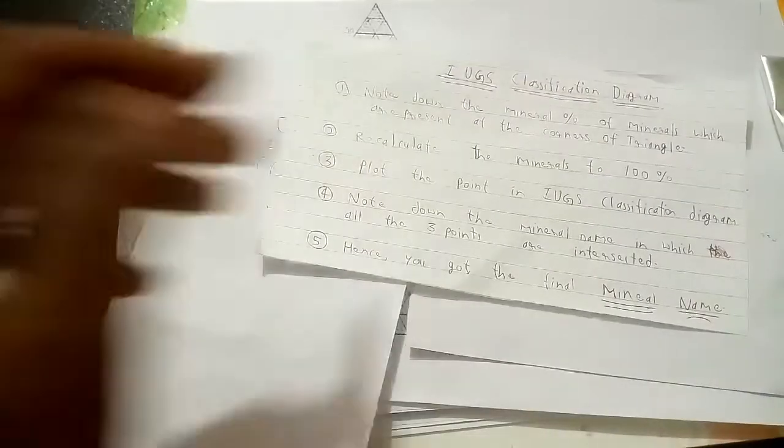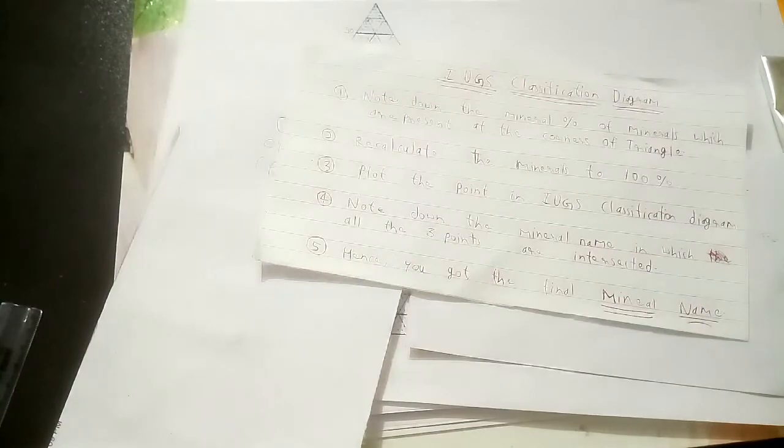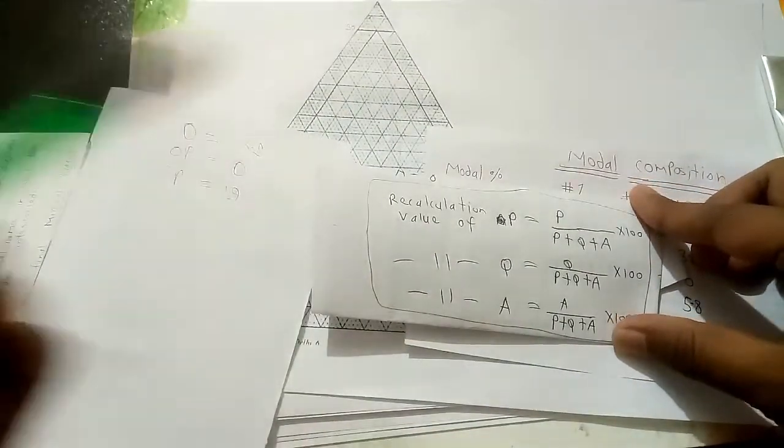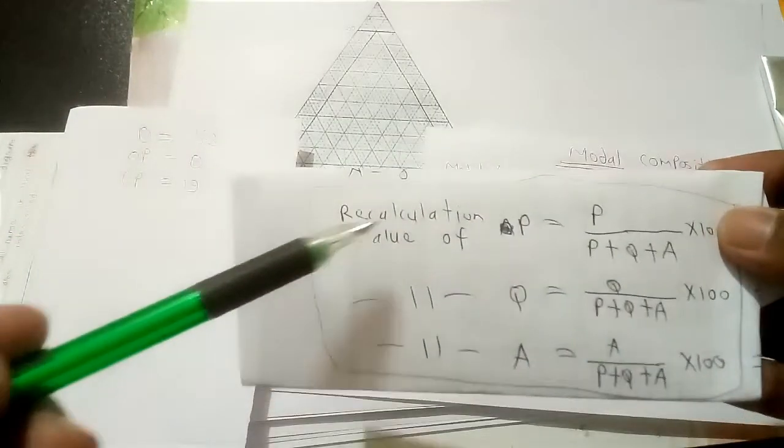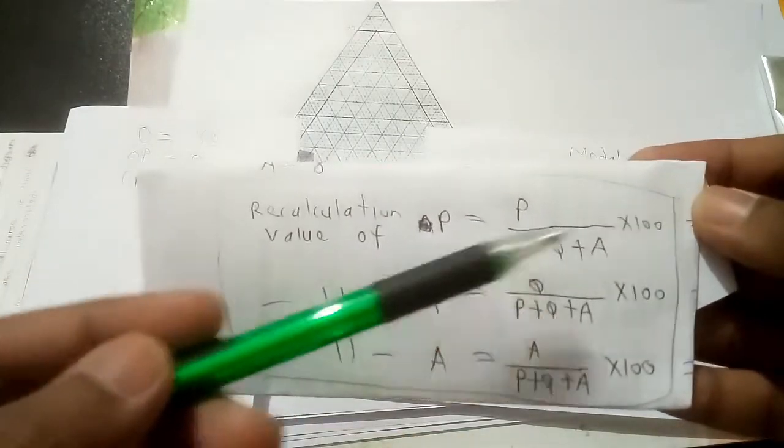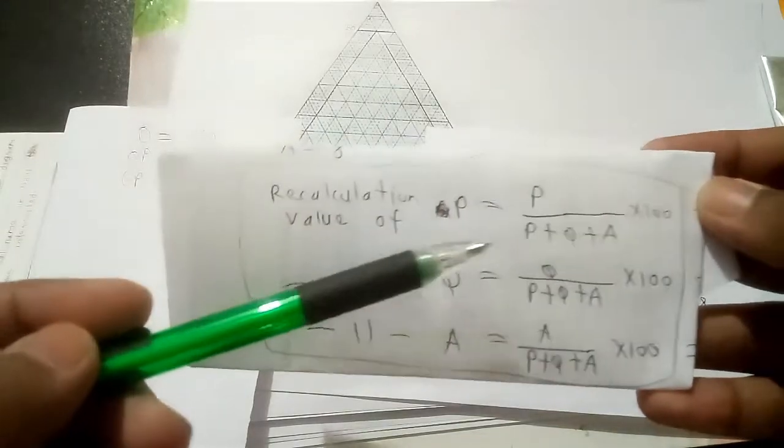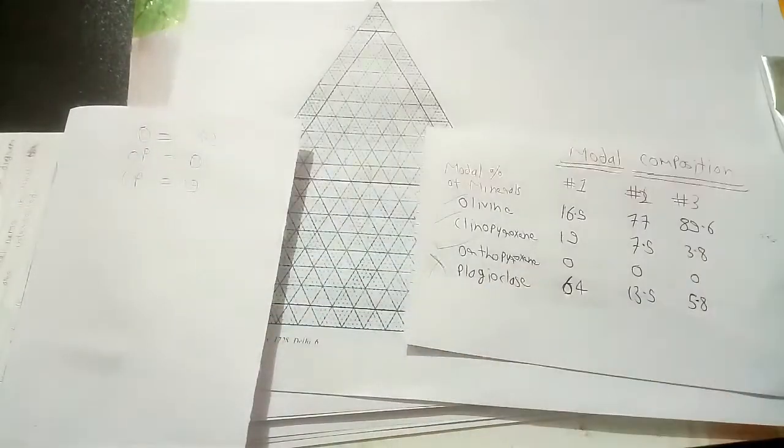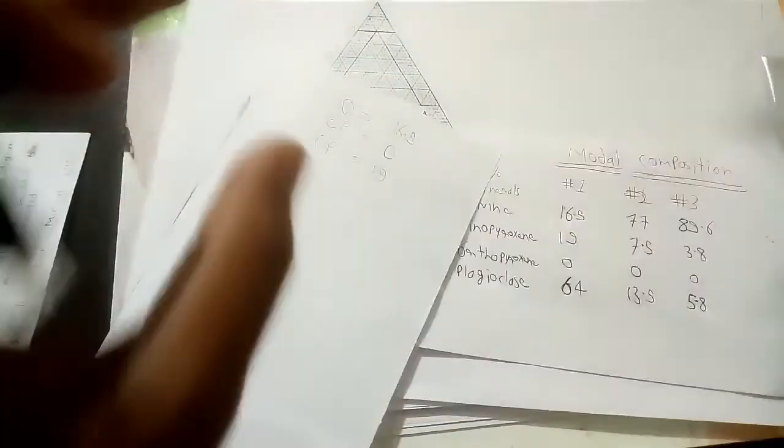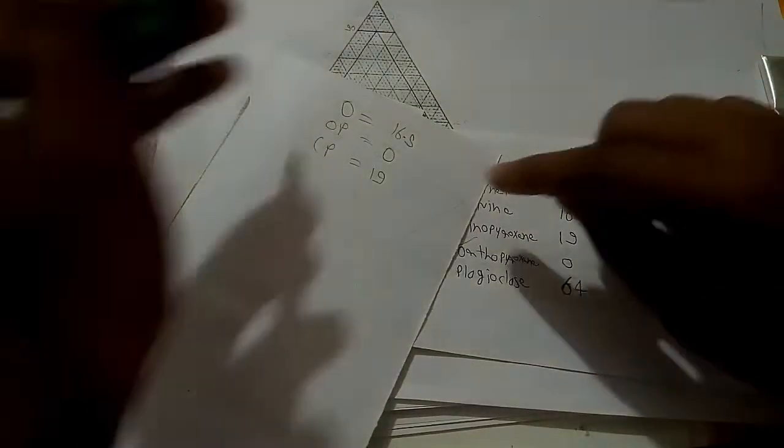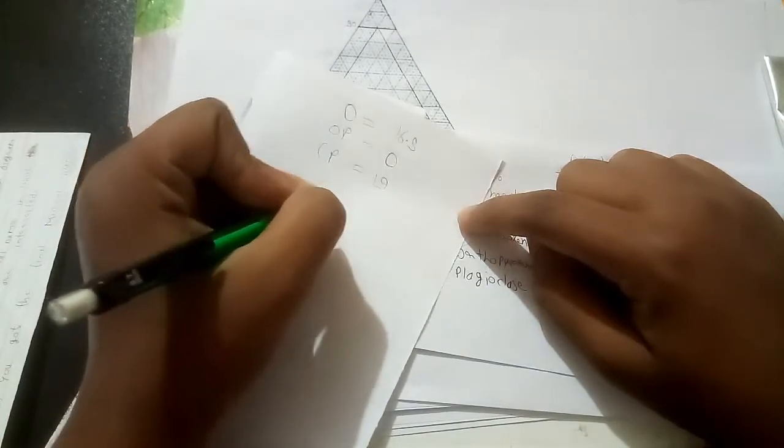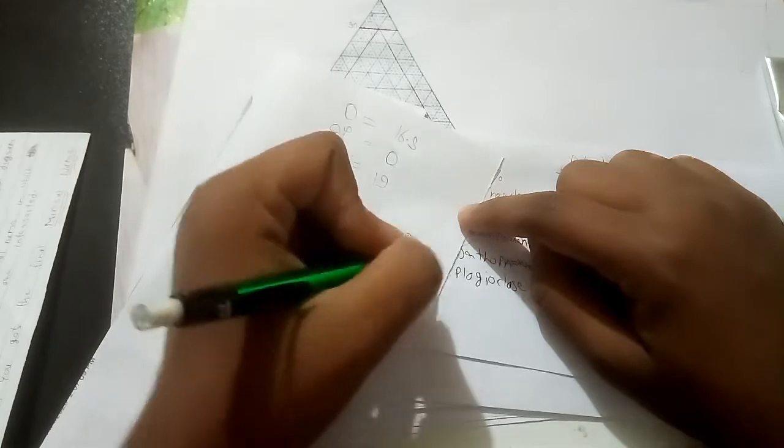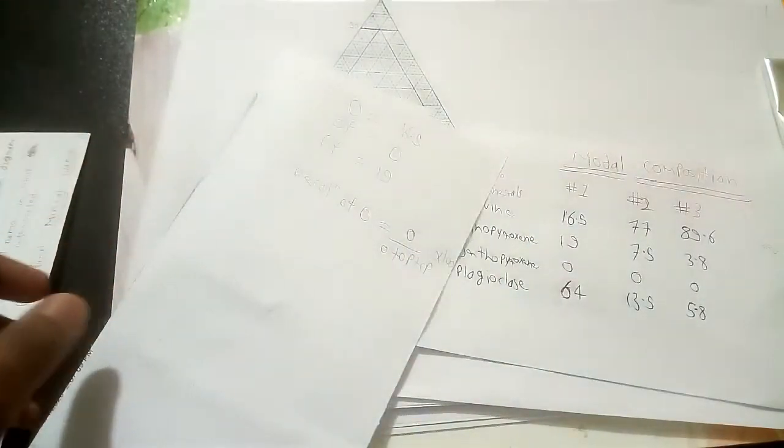Now the next step is to recalculate the mineral to 100%. I told you the basics of recalculation to 100% already many times. So once more I will tell you. If you have any three minerals P, Q and A, to find the recalculation value of P, you have to do only P divided by P plus Q plus A into 100. In the same way recalculation value of Q will be Q upon P plus Q plus A into 100. In the same way recalculation value of A will be A upon P plus Q plus A into 100. That's it. Using this formula, this is the basic formula, we will apply this in O, OP and CP.